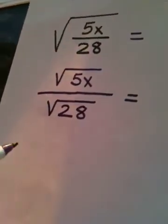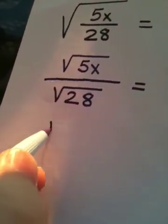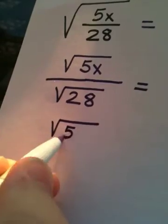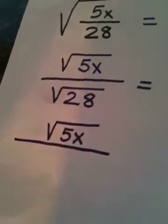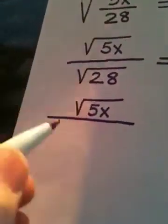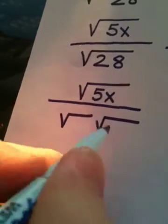Now, before I even worry about rationalizing, look what I can do. The square root of 5x in the top is just virtually done. There's nothing I can do to break this apart. But the square root of 28, we can break that into two square roots.